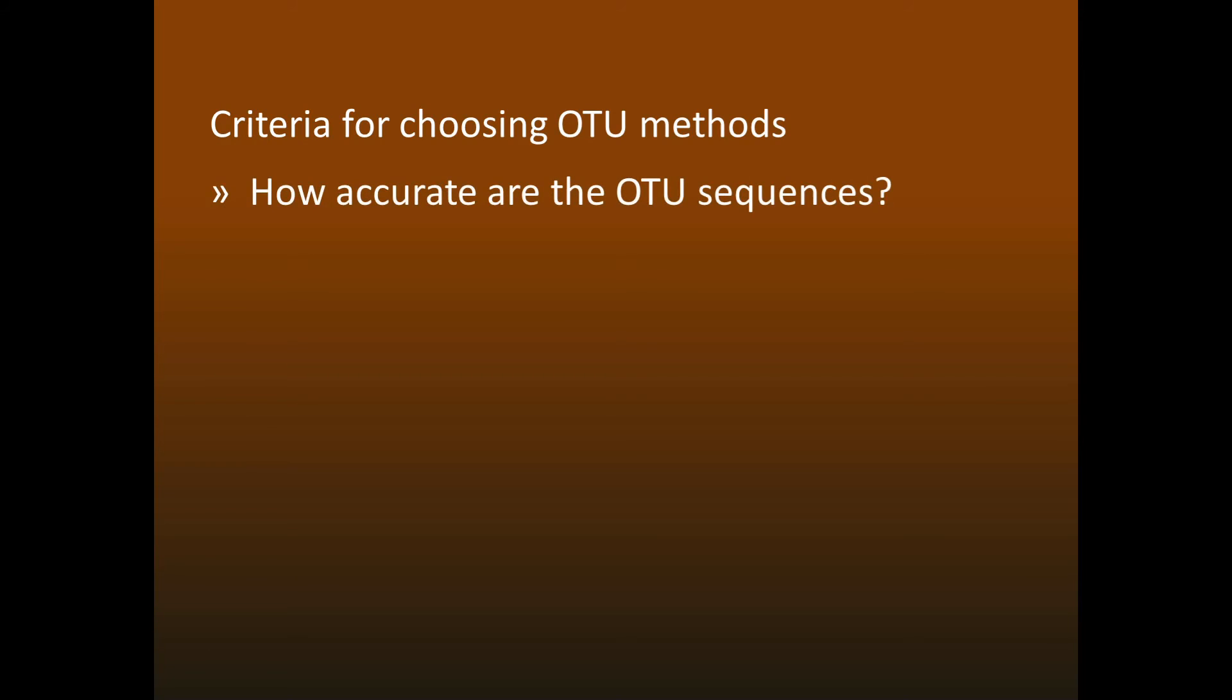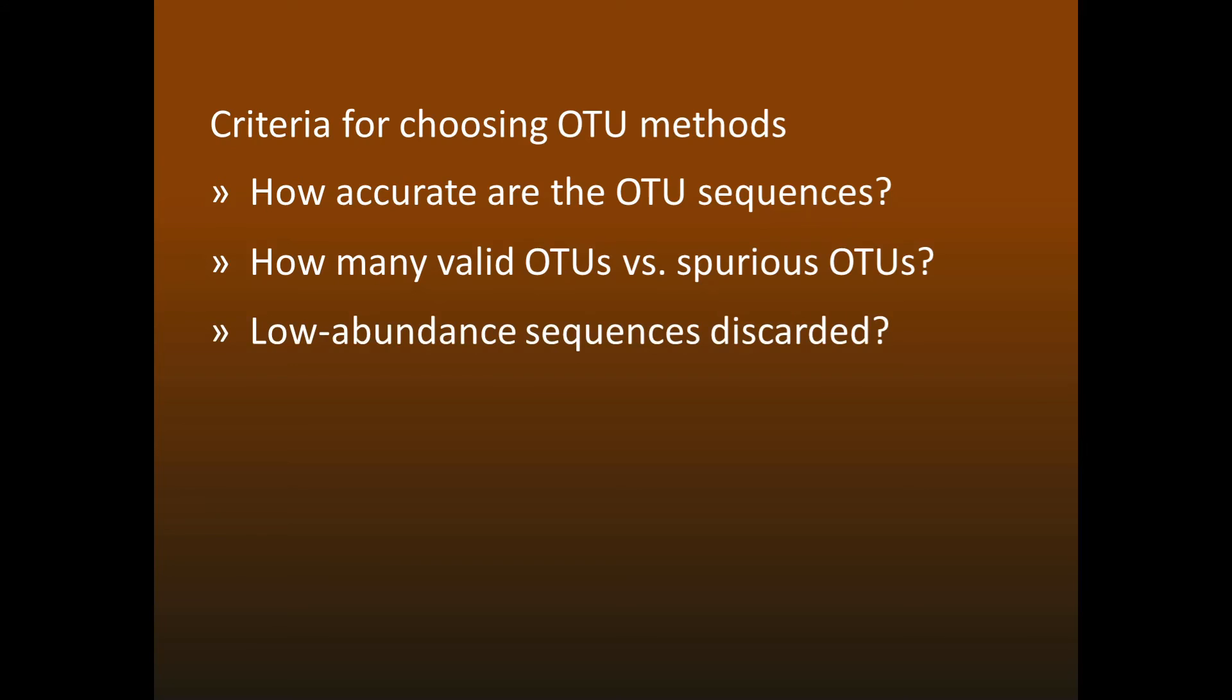To increase confidence in your analyses, I suggest trying different OTU methods and checking whether they give consistent results. So which OTU methods should you use? Here are the most important criteria for choosing an OTU method. How accurate are the OTU sequences? How many of the OTUs are valid rather than experimental error? How many low-abundance sequences are discarded? And how does the method scale to many samples and many reads?